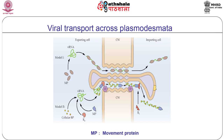Viral movement proteins interact with the following host proteins to accomplish their functions: cytoskeleton, protein kinase, chaperones, and docking proteins. This translocation takes place over a short distance, mostly to the neighboring cell. A good example of this is sugar loading — plasmodesmata play an important role in sugar loading in phloem cells from companion cells.